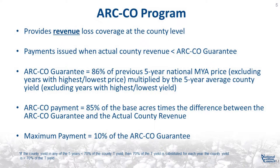Now we'll discuss the basics of the ARC County program. The ARC County program provides revenue loss coverage at the county level. Payments are issued when actual county revenue is less than the ARC County guarantee. The ARC County guarantee is equal to 86% of the previous five-year Olympic national marketing year average price multiplied by the five-year Olympic average county yield. The ARC County payment is equal to 85% of the farm's base acres times the difference between the ARC County guarantee and the actual county revenue. The maximum payment is equal to 10% of the ARC County guarantee.